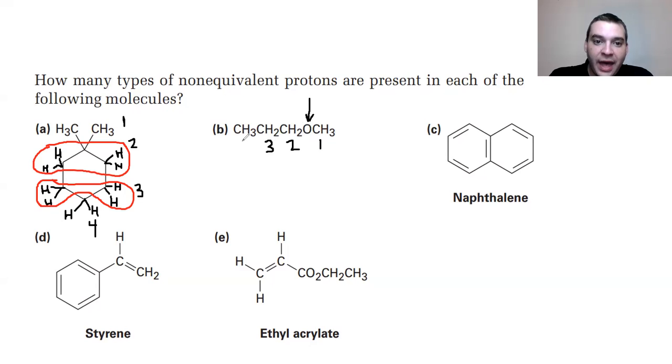As we go away from that oxygen, our carbons are going to have a different effect or feel a different inductive pull from that oxygen. So that means each of the hydrogens attached to each of these carbons successively is going to have a different proton signature.